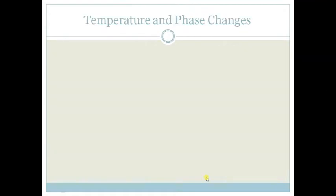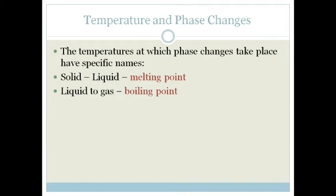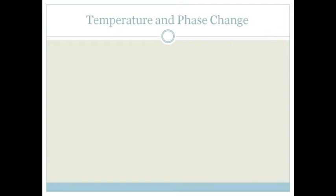Now the temperatures at which the phase changes occur have specific names. So obviously if we're going from a solid to a liquid the temperature at which it changes is going to be called the melting point. And if we go from a liquid to a gas it is called the boiling point. However, if we go the other way, from a gas to a liquid it is called a condensation point, and from a liquid to a solid we call it the freezing point.